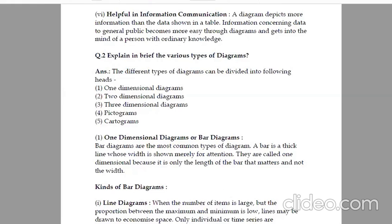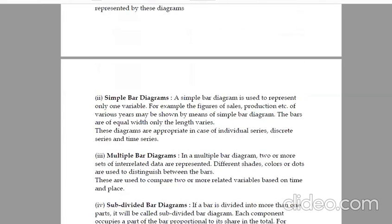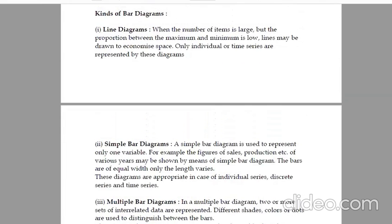There are kinds of bar diagrams divided into 10 to 11 parts. First one, line diagrams. When the number of items is large but the proportion between the maximum and minimum is low, lines may be drawn to economize space. Only individual or time series are represented by these diagrams. Time series we will discuss in our fourth unit.